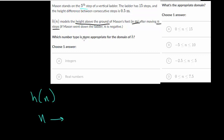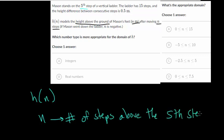So if he goes up, let's say two steps, then the n value would be two. So we can say n is the number of steps above the fifth step, since that's his starting step.